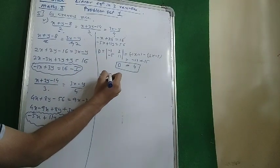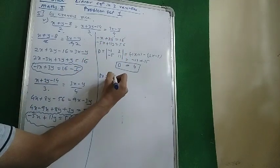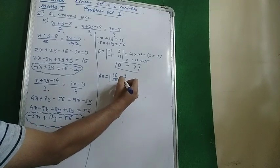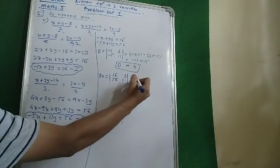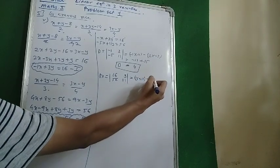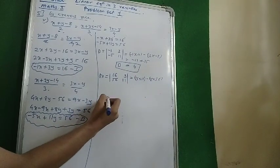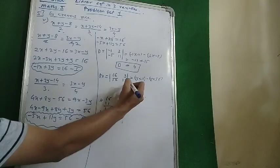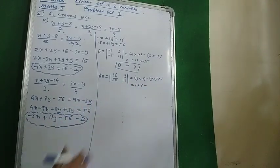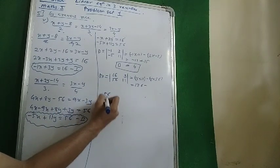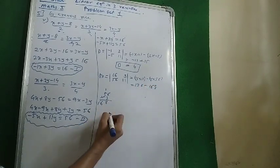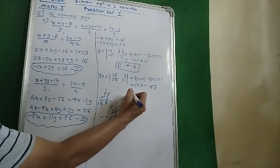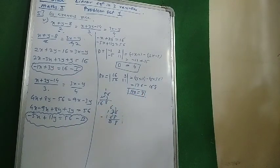Now finding Dx. The constants 16 and 56 go in the first column, and the y-coefficients 3 and 11 remain. So Dx equals 16 into 11 minus 3 into 56. That is 176 minus 168, giving Dx equals 8.